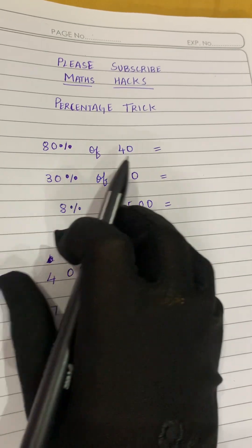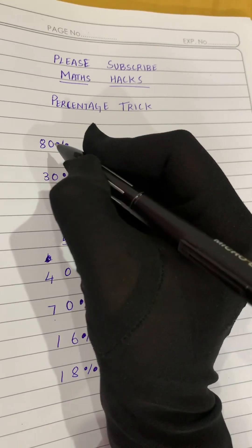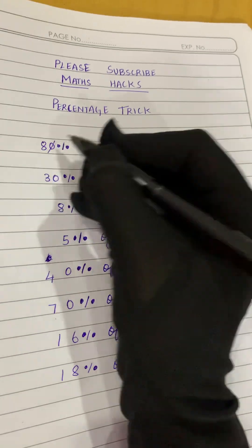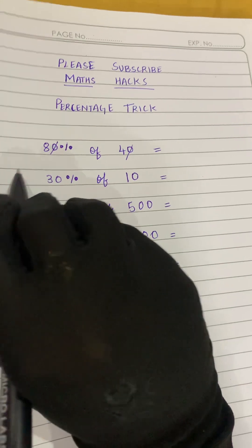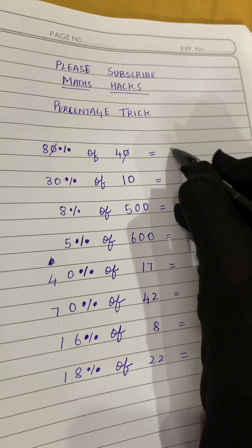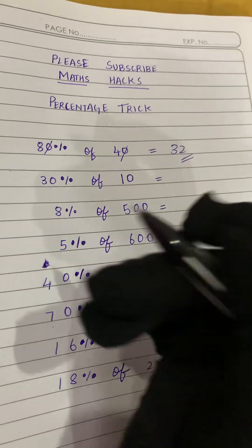The first step to solve this question will be: first we will cancel the zeros. We'll cancel the zero and this zero, so what is left? 8 and 4. So 8 into 4, 8 fours are 32, so our answer is 32. That's all, simple right? 8 fours are 32.